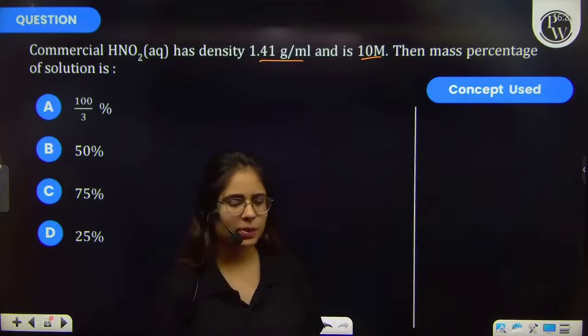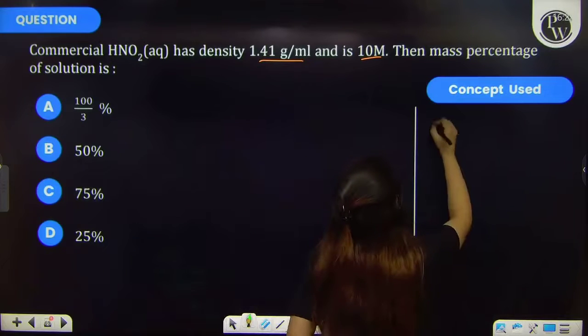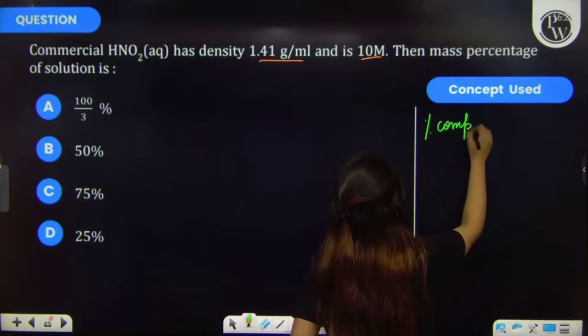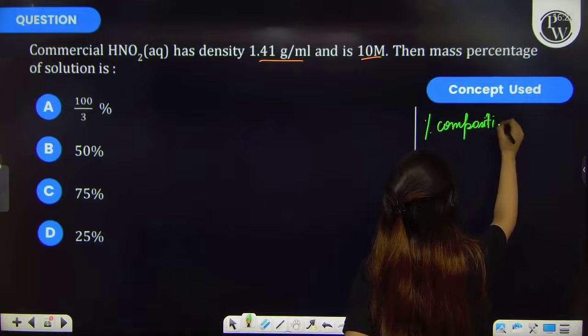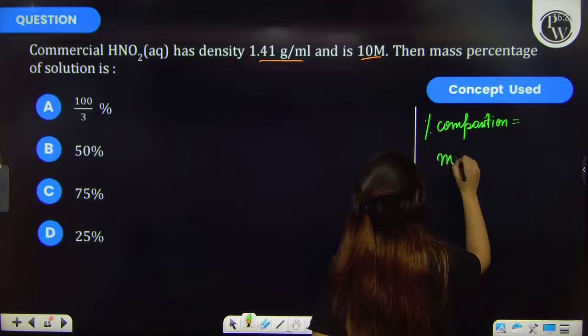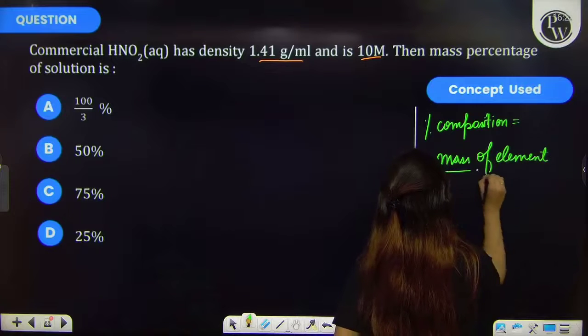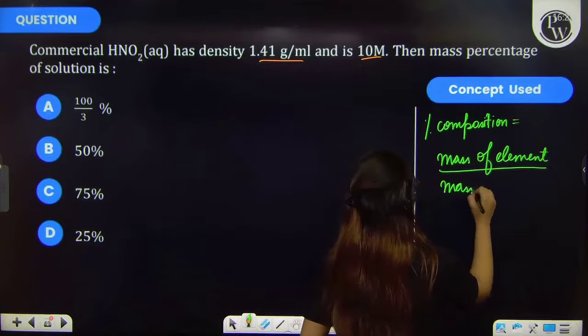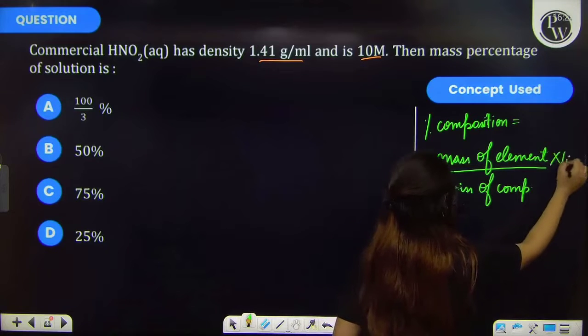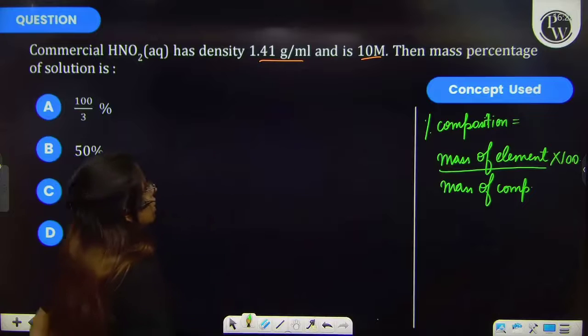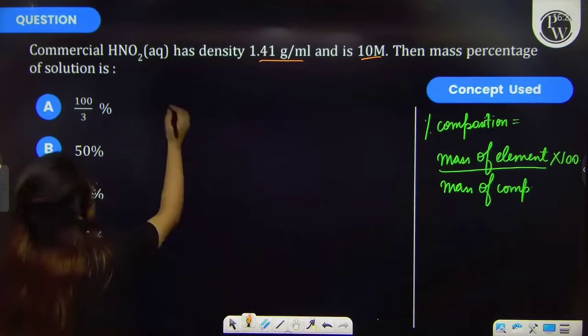Let's discuss the key concept of this question first. Percentage composition is equal to mass of element upon mass of compound into 100.